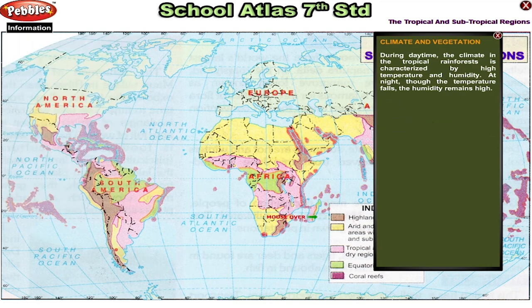Climate and vegetation. During daytime, the climate in the tropical rainforest is characterized by high temperature and humidity. At night, though the temperature falls, the humidity remains high.